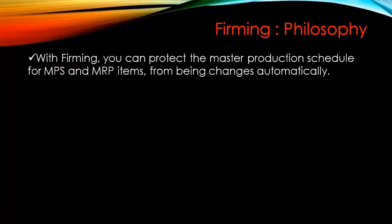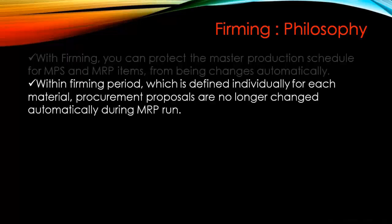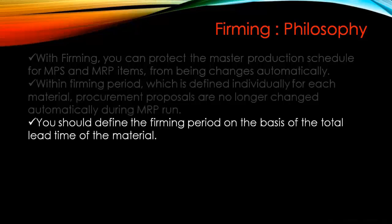With firming, you can protect the master production schedule for MPS or MRP items from being changed automatically. Planned orders can be protected from automatically being changed by MRP within the firming period, which is defined individually for each material. Procurement proposals are no longer changed automatically during an MRP run — whatever dates and quantities are in the planned order will not be changed. You should define the firming period on the basis of the total lead time of the material.